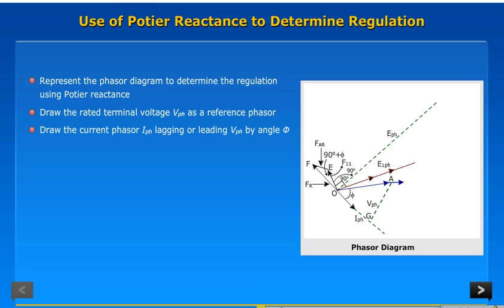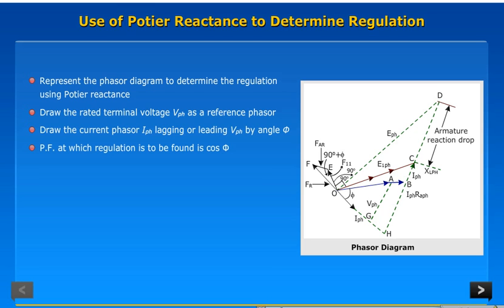Draw the current phasor IPH lagging or leading VPH by angle phi. Power factor at which regulation is to be found is cos phi. Add IAPH RAPH voltage drop in phase with IPH to VPH.